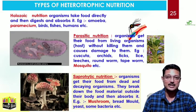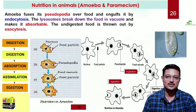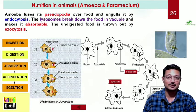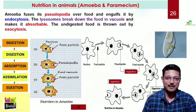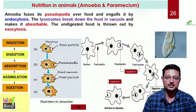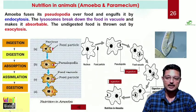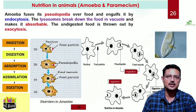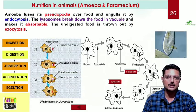Let us begin with the understanding of holozoic nutrition in unicellular organisms. Our typical example for the day is amoeba. These five processes - ingestion, digestion, absorption, assimilation, and egestion - how do they work? Whenever food comes near to the organism amoeba, what happens? Amoeba has got some cytoplasmic projections called pseudopodia.